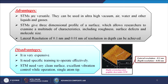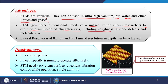What are the advantages? STMs are versatile — they can be used in ultra-high vacuum, air, water, and other liquids and gases. STMs give a three-dimensional profile of a surface allowing researchers to examine roughness, surface defects, and molecular size. Lateral resolution of 0.1 nanometer and depth resolution of 0.01 nanometer can be achieved. Disadvantages include high cost, need for specific training, requirement for very clean surfaces, excellent vibration control, and a single-atom tip. Here is a highly oriented pyrolytic graphite sheet imaged under STM.